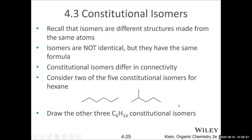To build isomers, you take carbons away from the main chain — the longest chain — and keep making the longest chain shorter and shorter. That way you have more substituents you can attach at whatever position. Based on the naming, you can differentiate whether they are the same compound or different compound. These two are different: this is n-hexane, and this is 2-methylpentane.